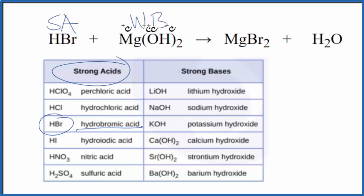So now we know the strength of the acid and the base. We can use these rules to figure out whether MgBr2 is acidic, basic, or neutral when it's dissolved in water.